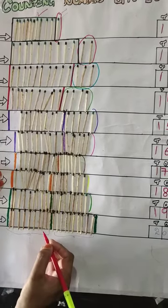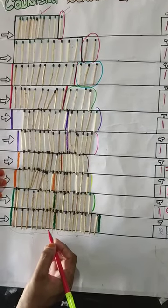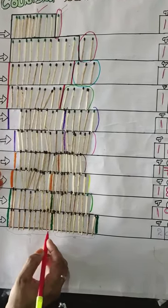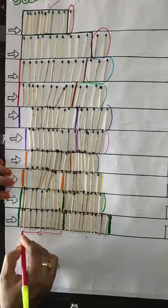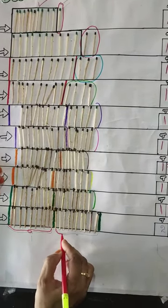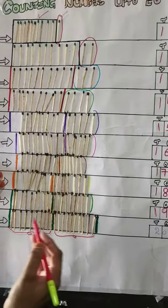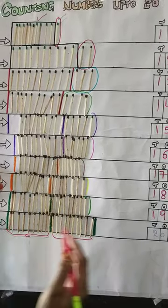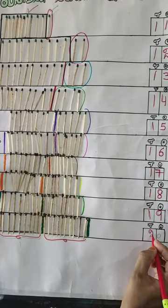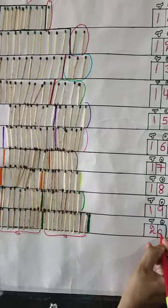Now here we have 20 magic sticks. What we will do? First 10 magic sticks will represent 1 10 and 2nd group will represent 2 10. That means 20 magic sticks will represent 2 10s and the number is 20.